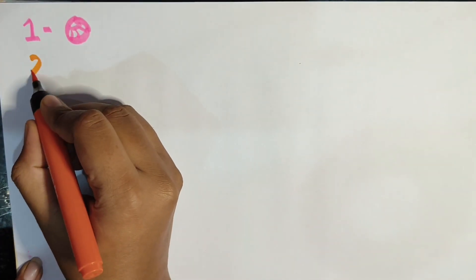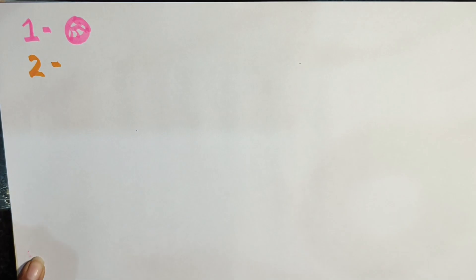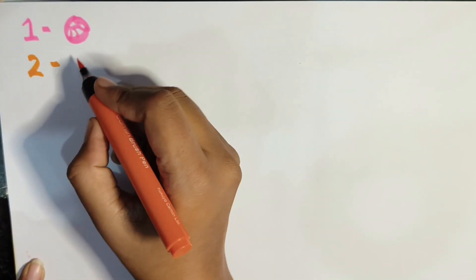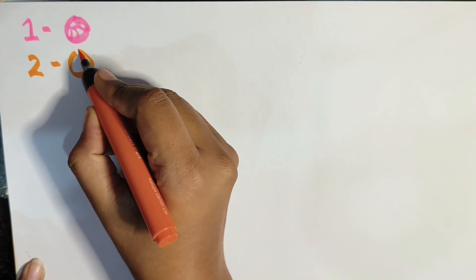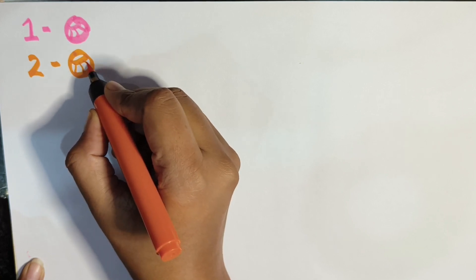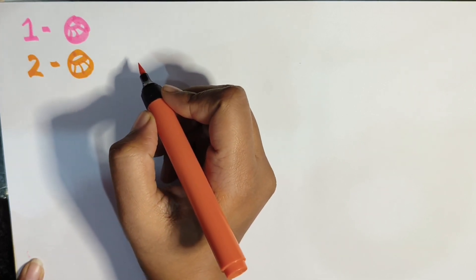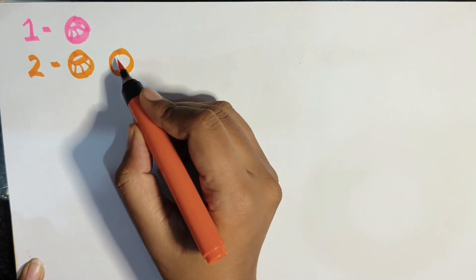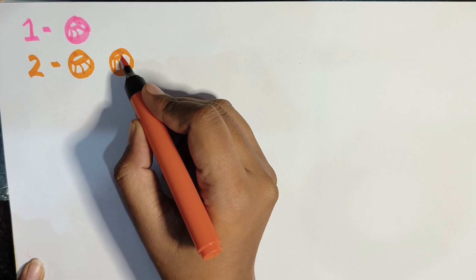Now after 1 there comes 2. So how many balls will you draw? You will draw 2 balls. So in front of 2 you have to make 2 balls. Like this — 1 and 2. 2 balls.